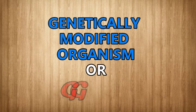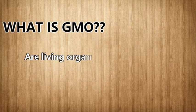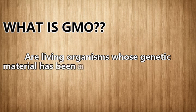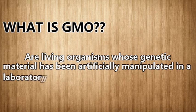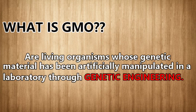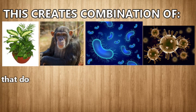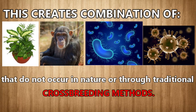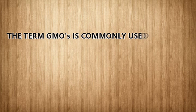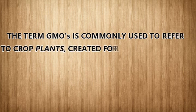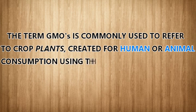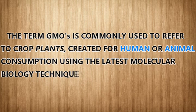Genetically Modified Organism, or GMO — what is GMO? A living organism whose genetic material has been artificially manipulated in a laboratory through genetic engineering. This creates combinations of plant, animal, bacteria, and virus genes that do not occur in nature or through traditional cross-breeding methods. The term GMO is most commonly used to refer to crop plants created for human or animal consumption using the latest molecular biology techniques.